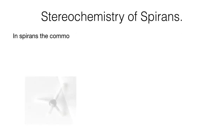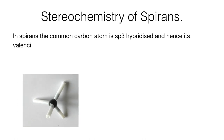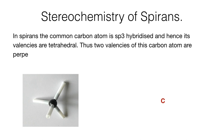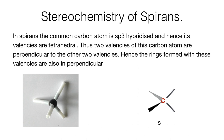In spirans, the common carbon atom is sp3-hybridized and hence its valencies are tetrahedral. Thus, two valencies of this carbon atom are perpendicular to the other two valencies, and hence the rings formed with these valencies are also in perpendicular planes.